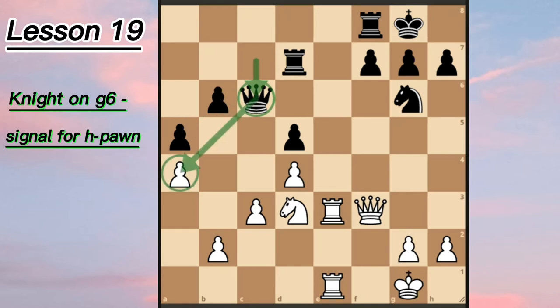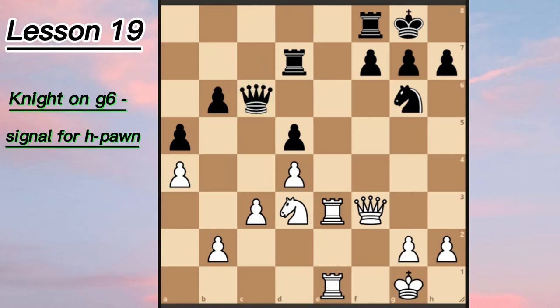Black wanted to distract White's attention and force them to protect the a4 pawn. If White played something like rook a1, we may say that Black would have gained some success — not even success on the board but mental success, because it's always very unpleasant to protect something passively.